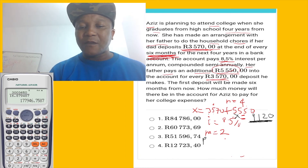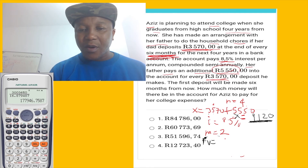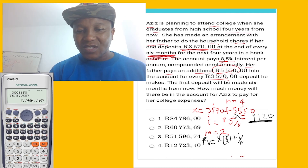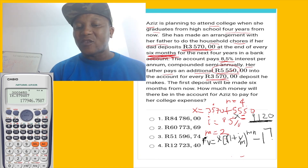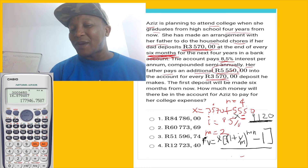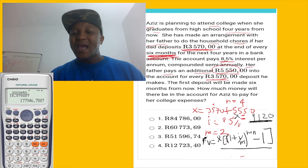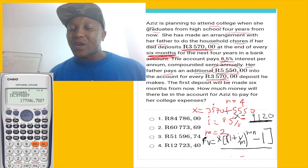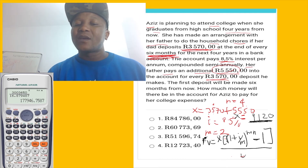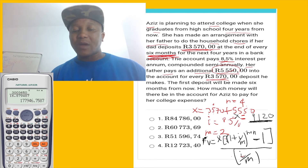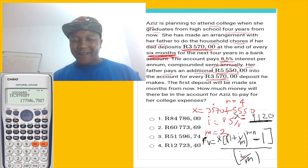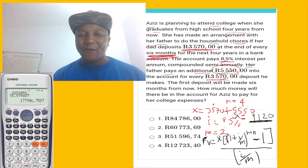Since there's no money right now and we're looking at what happens over four years, this is a future value problem. The future value formula is: FV = x × [(1 + i/m)^(mn) − 1] / (i/m). It looks similar to present value, but notice: there's no negative exponent here, and the one is moved — make sure you remember the difference.